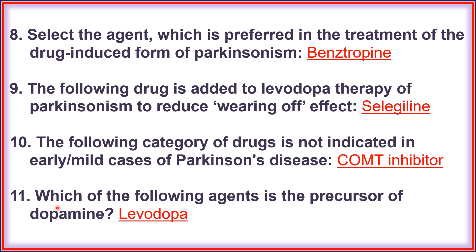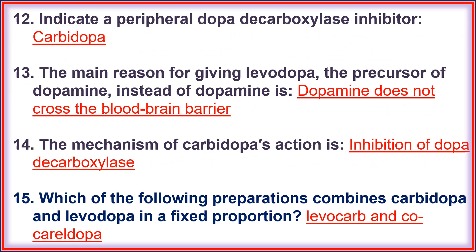Question eleven: the precursor of dopamine is levodopa. Question twelve: a peripheral dopa decarboxylase inhibitor is carbidopa. Question thirteen: the main reason for giving levodopa instead of dopamine is that dopamine does not cross the blood-brain barrier.